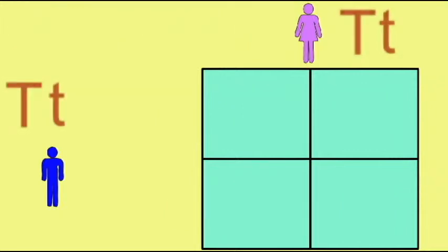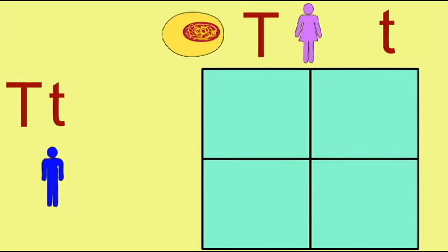When the F1 generation is crossed, since members of the F1 generation are heterozygous, both males and females would produce two types of gametes.